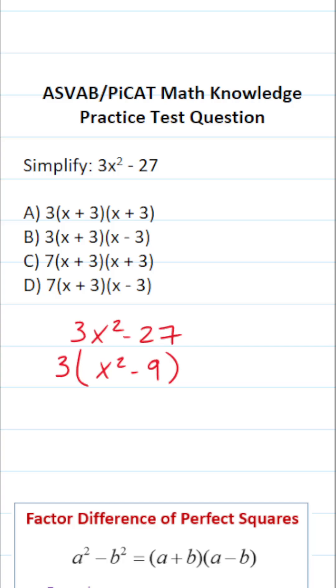Now this isn't an answer choice because we can actually simplify this further by factoring x squared minus 9. As it happens, x squared minus 9 is the difference of perfect squares.